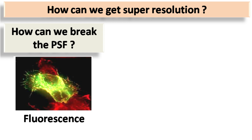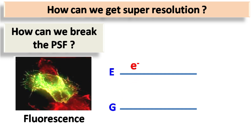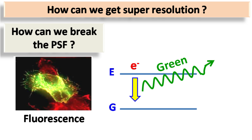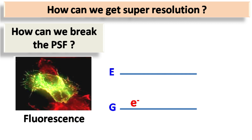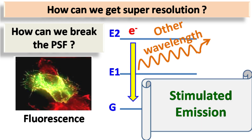Look carefully — in a confocal microscope, what we ultimately detect is the fluorescence in the specimen. In fluorescence, the electron absorbs radiation of a specific wavelength and gets excited. When this electron comes back to the ground state, fluorescence is emitted. Now here comes the brilliant idea: this excited electron can be re-excited to a higher energy level such that when it comes back to the ground state, the fluorescence emitted is of a different wavelength. This phenomenon is known as stimulated emission.